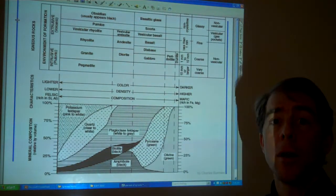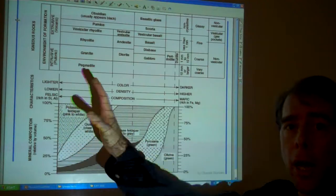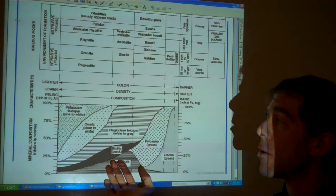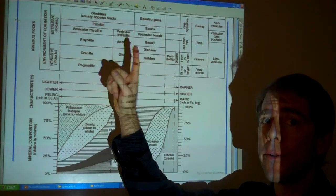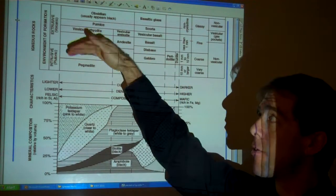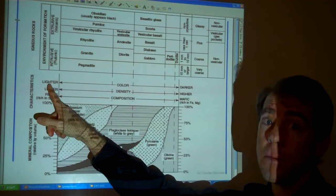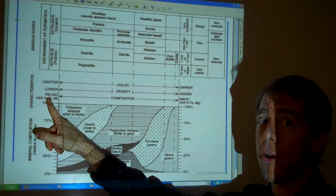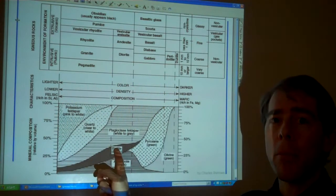So now I want to show you how to use the mineral section of this igneous rock chart. If you get out your reference table on page 6, you'll see this chart at the bottom. We talked about the top of this chart in terms of igneous intrusive and extrusive rocks and their composition, or their color, density, and their composition.